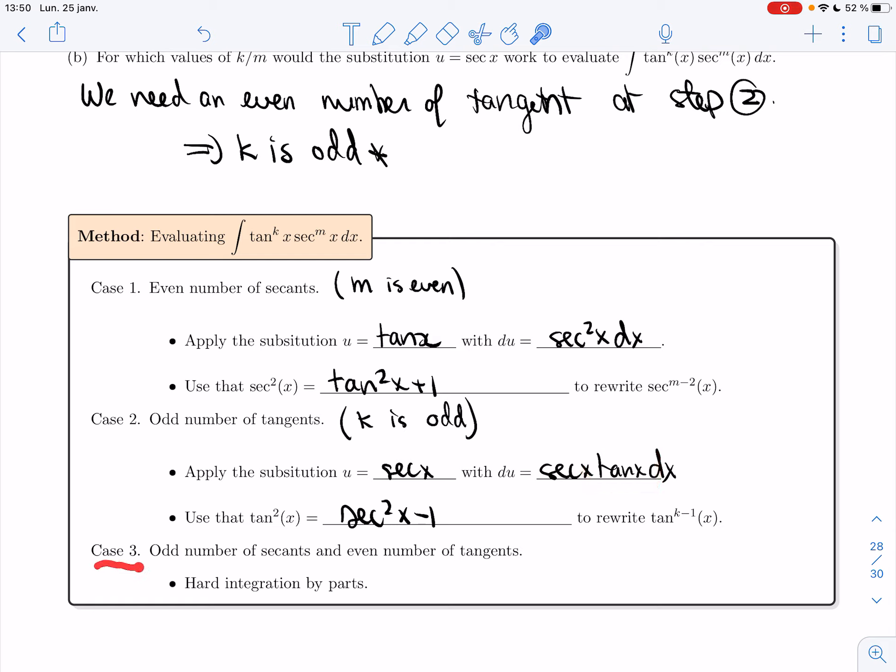The last case that we have - the odd number of secant and even number of tangent - that one would be a hard integration by parts. Because we have fewer weeks, this term I'm gonna skip that.